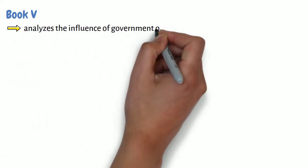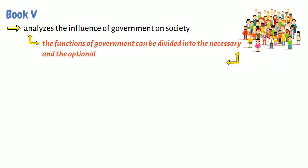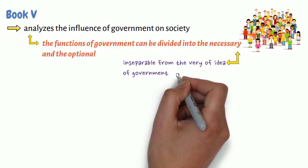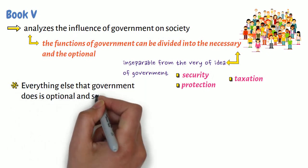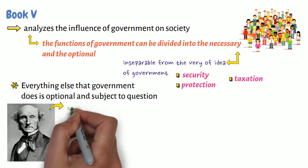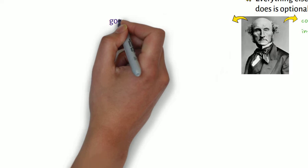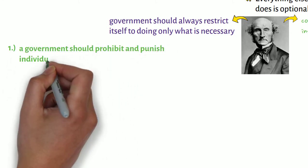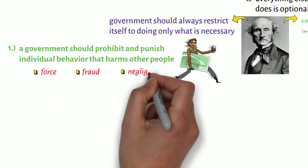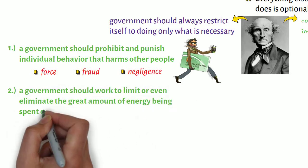Book 5 analyzes the influence of government on society, arguing that the functions of government can be divided into the necessary and the optional. The necessary is that which is inseparable from the very idea of government, such as security, protection, and taxation. Everything else that government does is optional and subject to question. Mill concludes by considering the question of a government's interference with individual liberty. Mill asserts that government should always restrict itself to doing only what is necessary. First, a government should prohibit and punish individual behavior that harms other people, such as force, fraud, or negligence. Second, a government should work to limit or even eliminate the great amount of energy being spent on the harming of one nation by another.